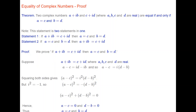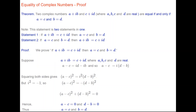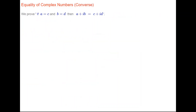The statement (a minus c) squared plus (d minus b) squared equals 0 is a statement about real numbers, and it can only be true if a minus c equals 0 and d minus b equals 0, because otherwise the left-hand side is positive and cannot equal 0. Hence a minus c equals 0 and d minus b equals 0, and thus a equals c and b equals d, which completes the first part of the proof.